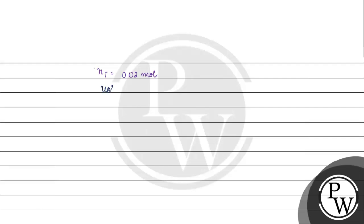The volume given to us is 100 milliliters. Since 1 liter equals 1000 milliliters, 1 mL equals 10 raised to the power minus 3 liters. So 100 mL equals 10 raised to the power minus 1 liters, which is 0.1 liters.